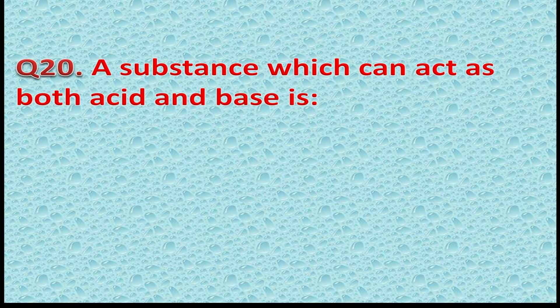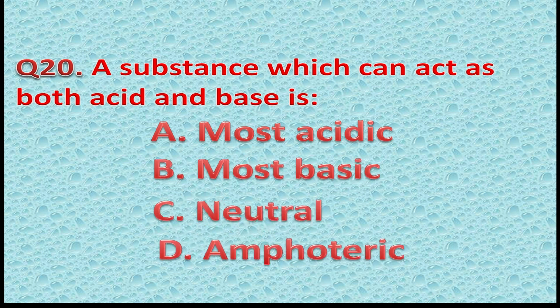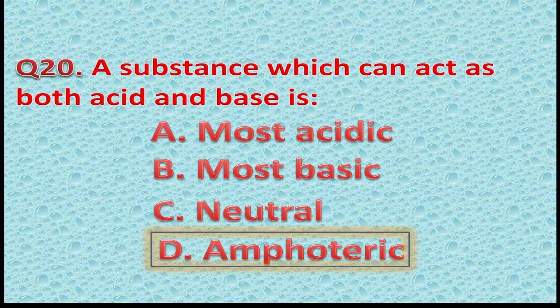Question 20: A substance which can act as both acid and base is — Option A: Most acidic. Option B: Most basic. Option C: Neutral. Option D: Amphoteric. The correct answer is Option D — Amphoteric. You got one more point for this correct answer.